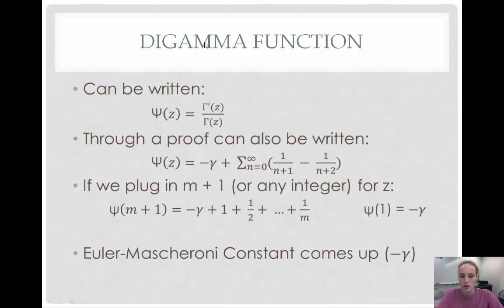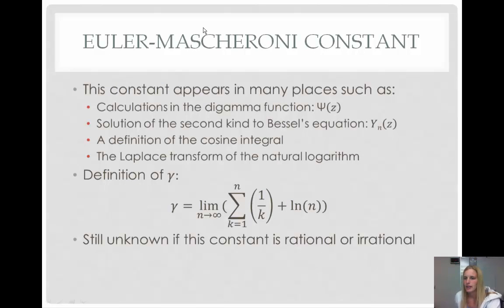Now, this little gamma is also known as the Euler-Mascheroni constant, and it comes up in a variety of equations, which we'll look into next.